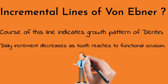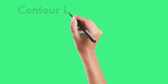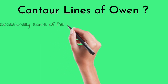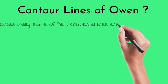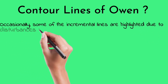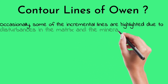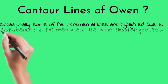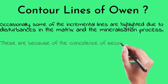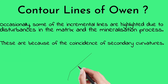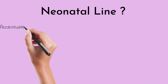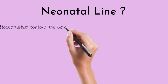The contour lines of Owen are occasionally some incremental lines that are highlighted due to disturbance in the matrix and mineralization process. These lines are demonstrated in ground sections. Some investigators believe they are caused by the coincidence of secondary curvatures of the dentinal tubules.